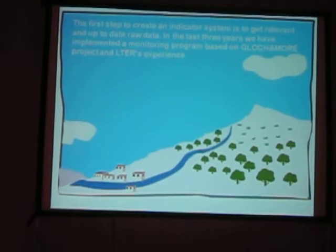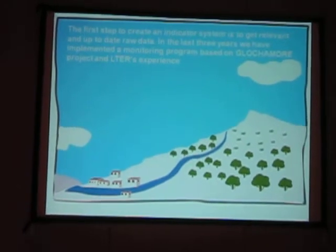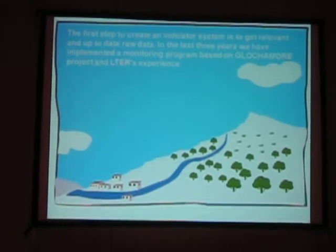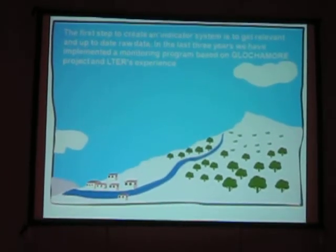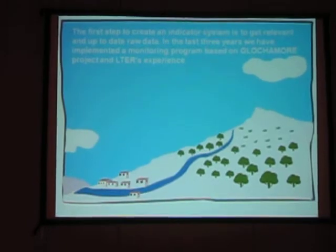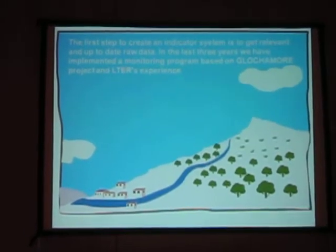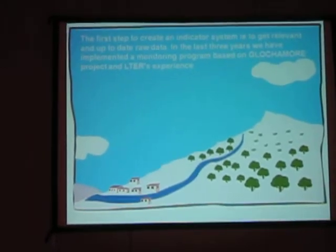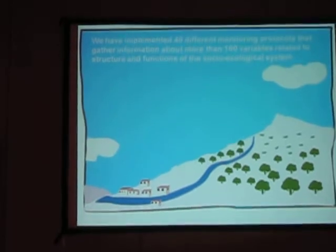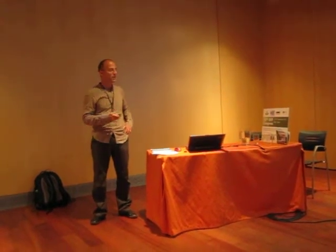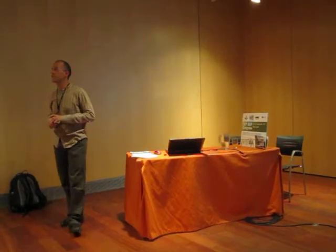In order to try to answer this question, we are designing and implementing an indicator system in our site. The first step to create this indicator system is to get relevant and up-to-date information about the processes and the structure that are taking place in our landscape. In the last three years, we have been implementing a monitoring program in Sierra Nevada, following the local LTER projects and the experience that we have from LTER.